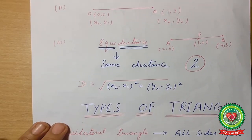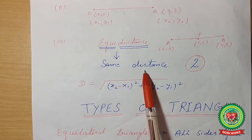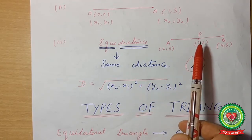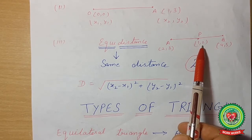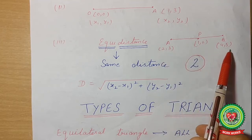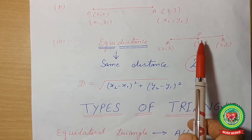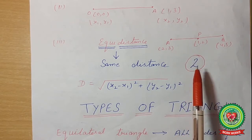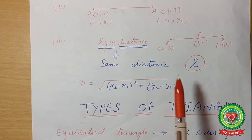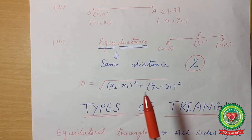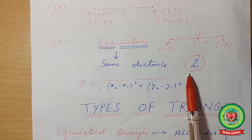The third concept is equidistance. Equidistance means the same distance — equal distance. If we want to find out that point P is equidistant from points A and B, we first find distance PA, then distance PB. We apply the distance formula two times. When we know PA and PB, we can tell whether P is at the same distance from A and B or not.